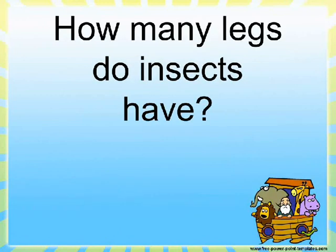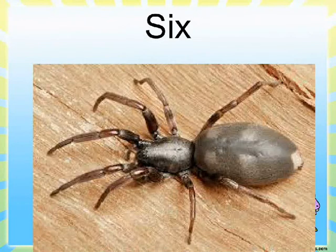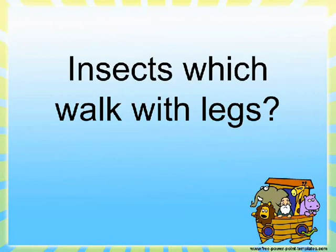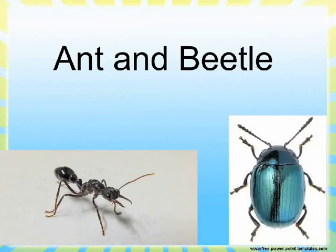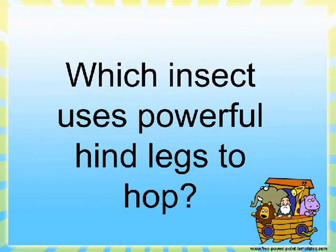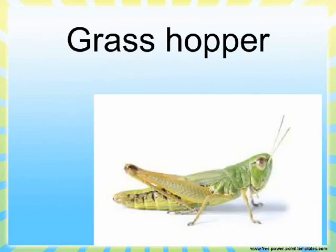How many legs do insects have? Six. Insects which walk with legs — ant and beetle. Which insect uses powerful hind legs to hop? Grasshopper.